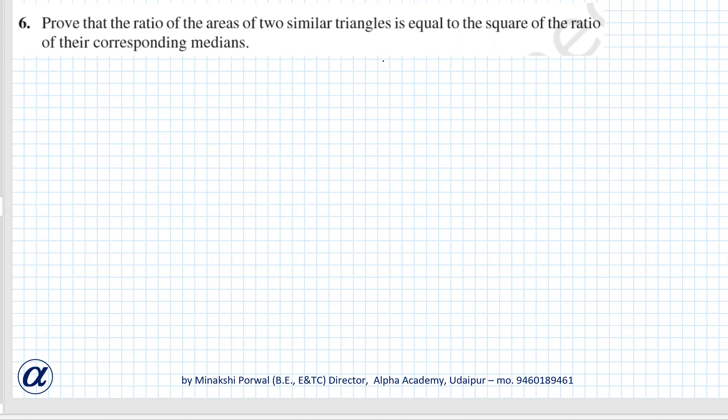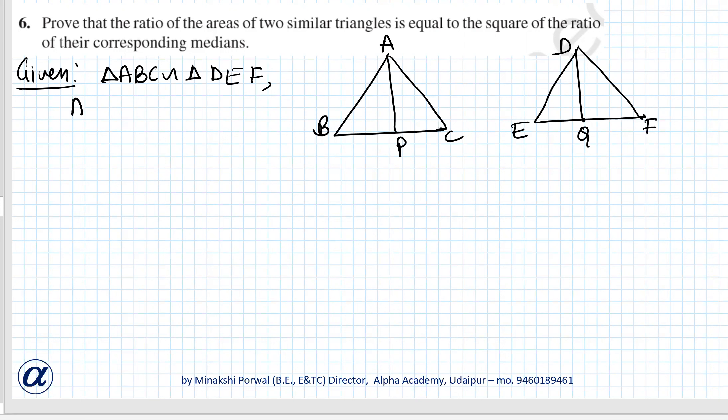First, we will construct two triangles. Suppose there are two triangles ABC and DEF. Suppose AP is a median and DQ is a median. Given: triangle ABC is similar to triangle DEF, and AP and DQ are medians.